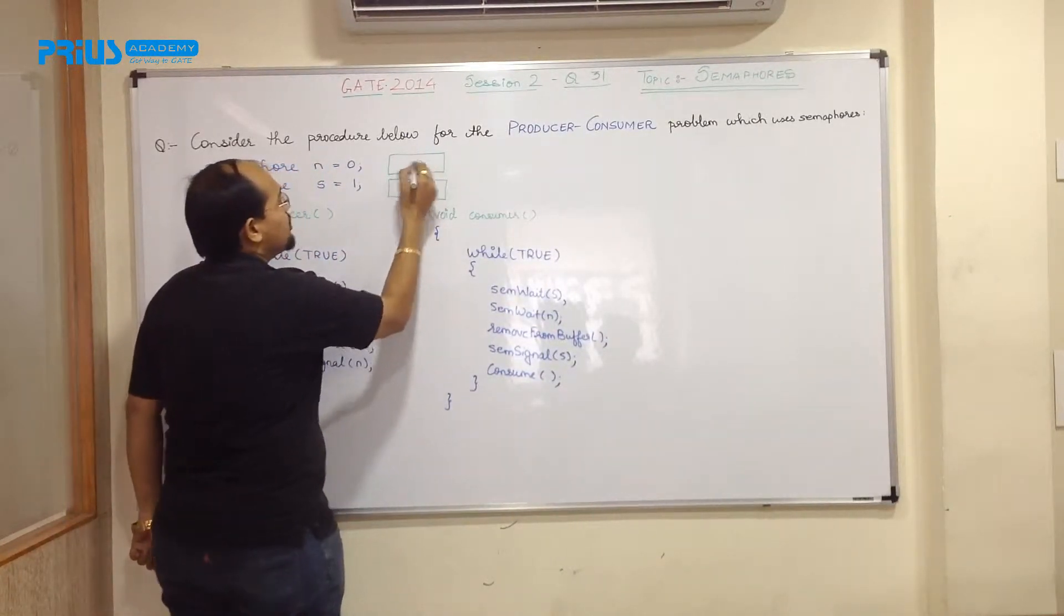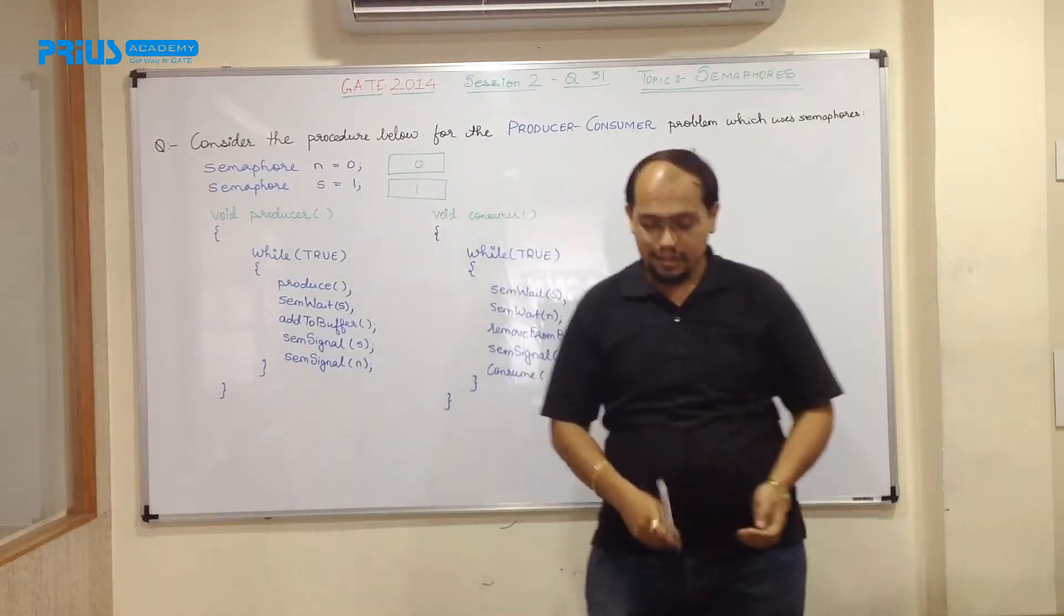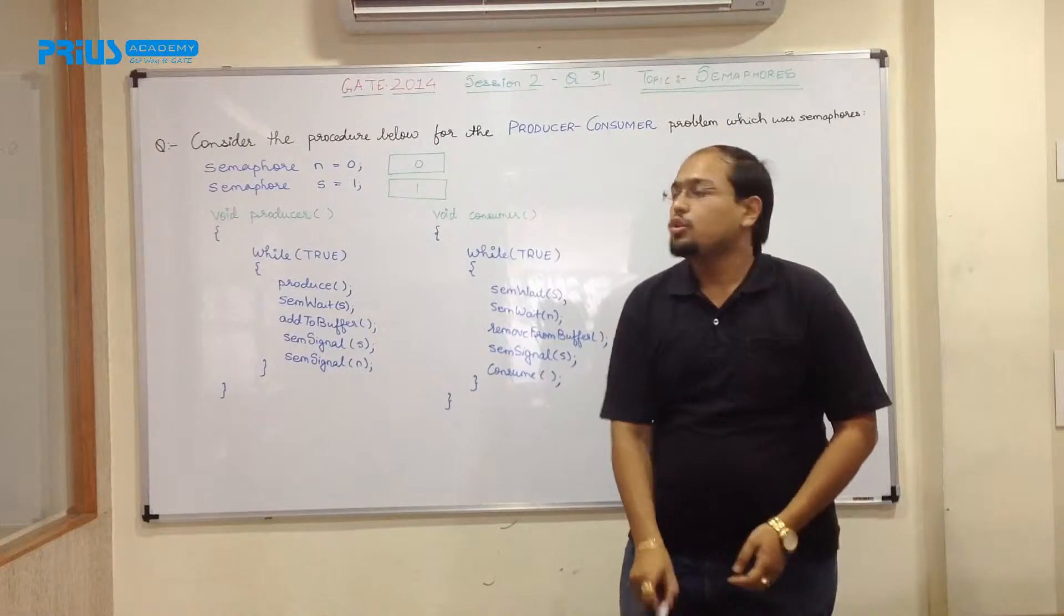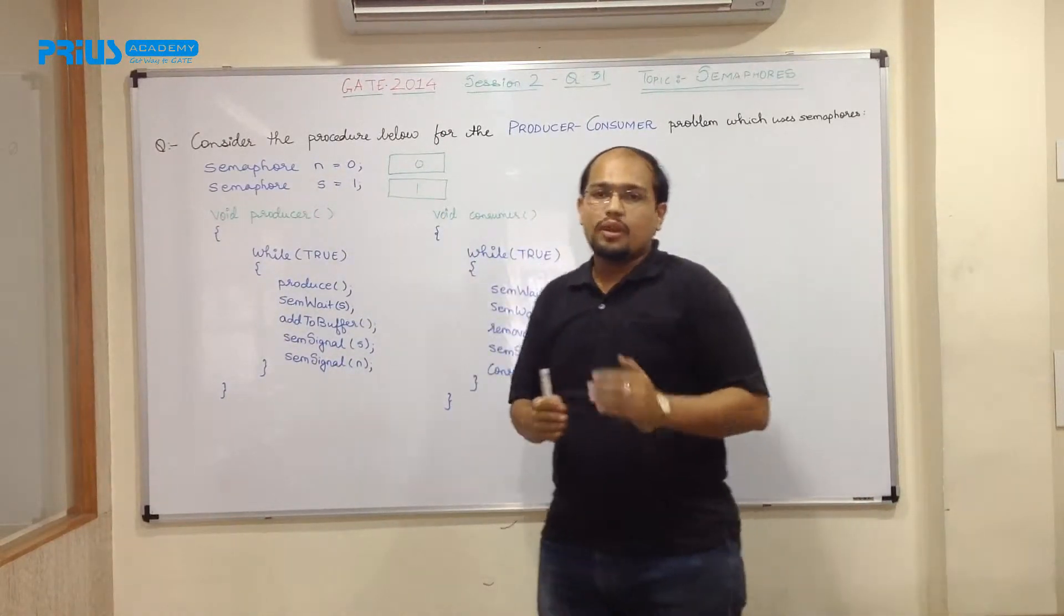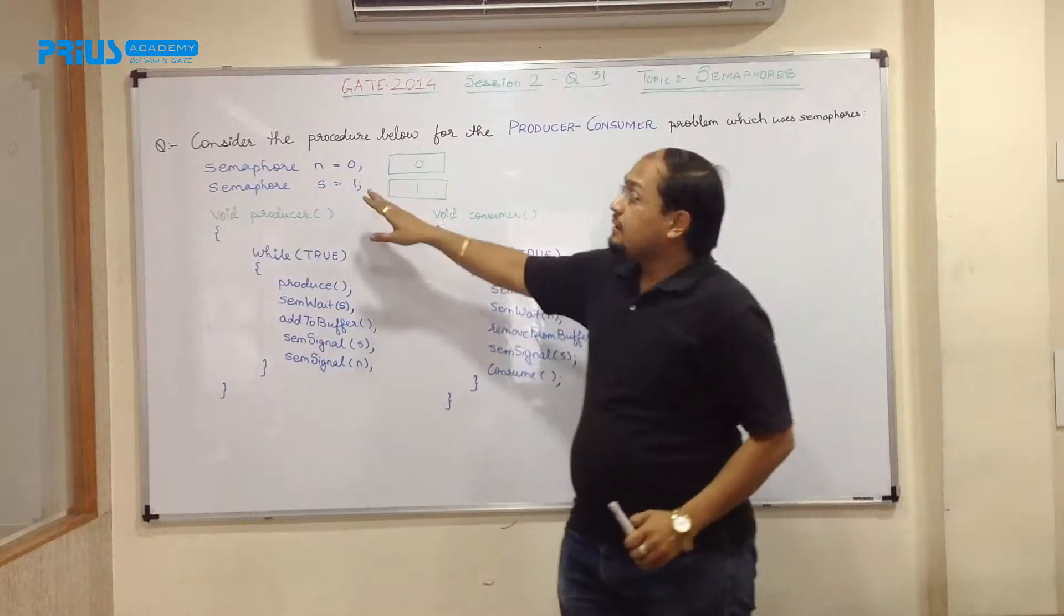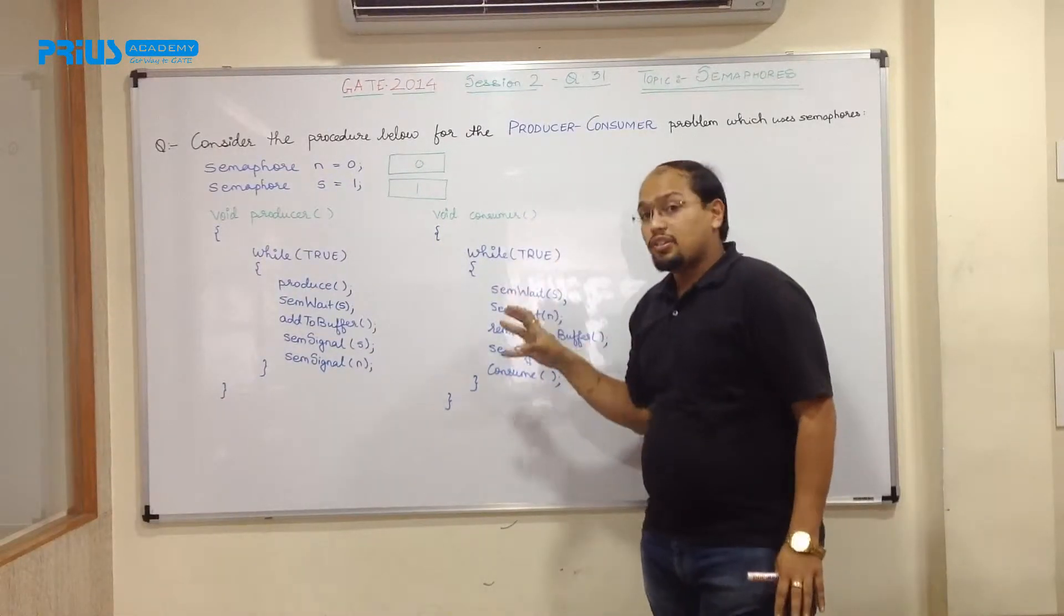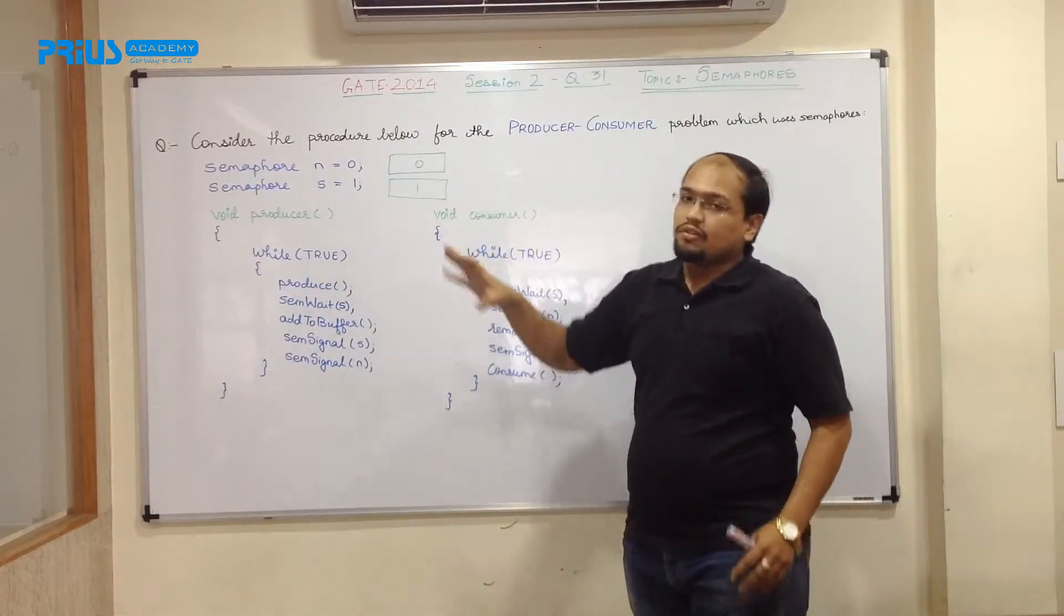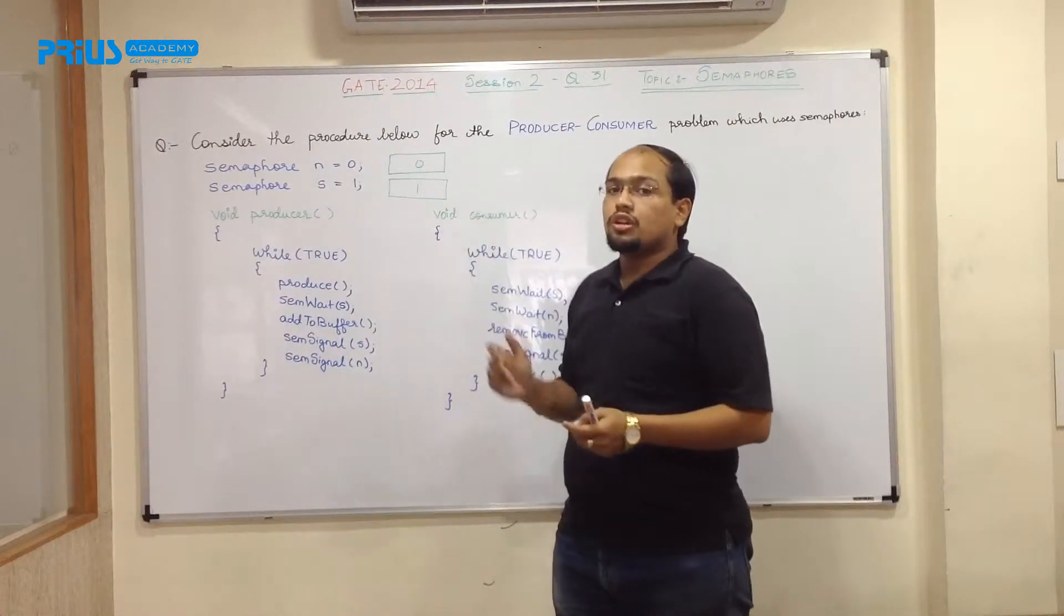Now can I consider to be a binary semaphore? Yes, I can because there are only two ways like if s is initialized to 1 that means it will be having value 1 and 0. And n is initialized to 0 means I may assume it to be the number of processes actively participating in this or maybe the size of the buffer.